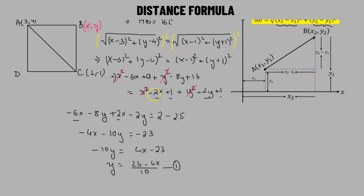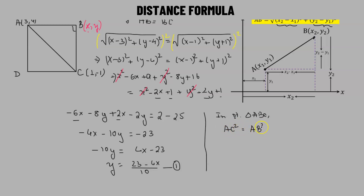Now, triangle ABC is clearly a right-angled triangle, right-angled at B. So we can apply the Pythagorean theorem: AC² equals AB² plus BC². We have already found AB and BC. We now find AC using the distance formula.